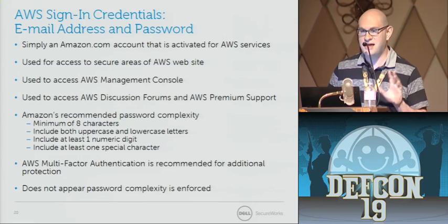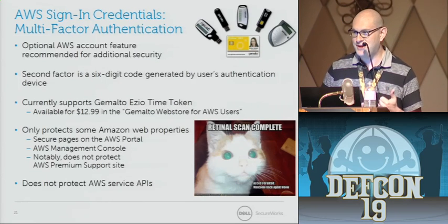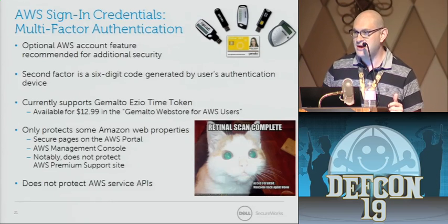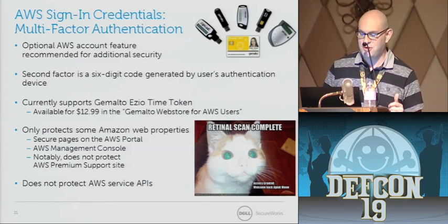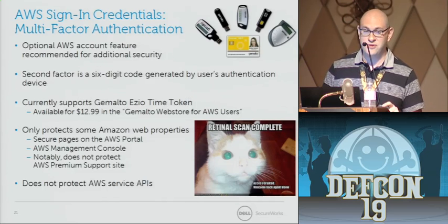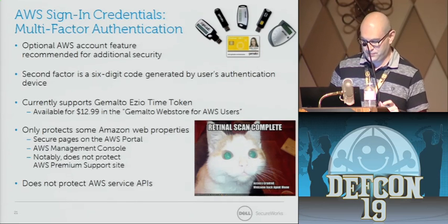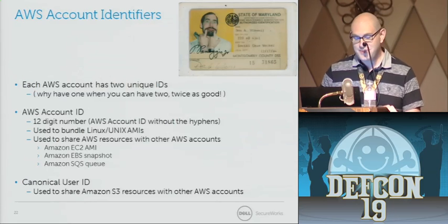CloudFront key pairs are yet another set of credentials. We found there are so many different access keys, private keys, key pairs, and CloudFront key pairs that it's quite confusing — and really the first part of our research was just identifying and enumerating all the different credentials you use with Amazon Web Services. This key is used when using their CDN network to generate signed URLs — essentially a way of offering private content within Amazon's content distribution network.